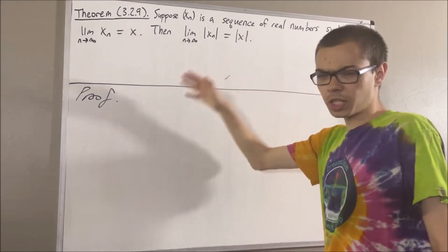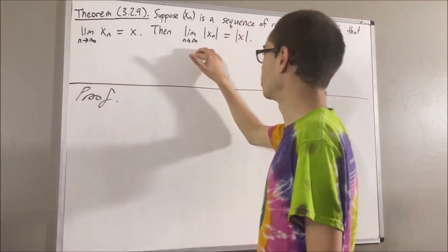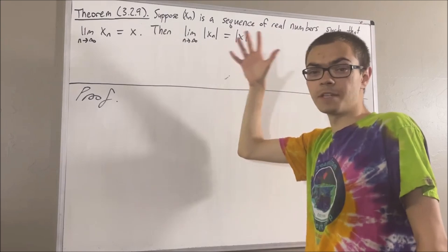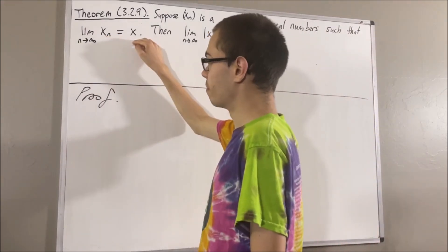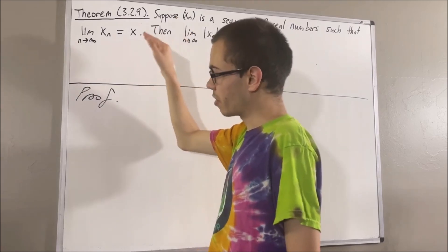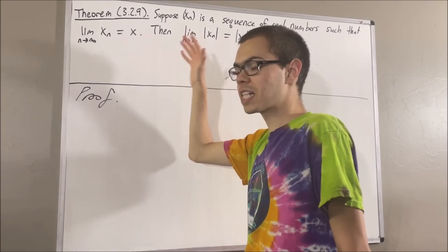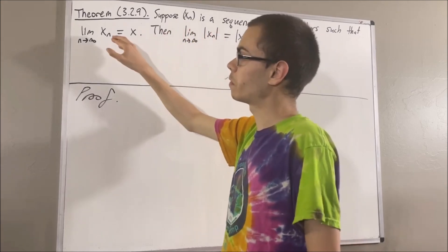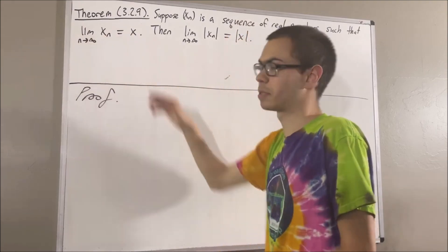Now, before we get to the proof, let's remind ourselves what these two things mean. If we recall from the definition of the limit of a sequence, to say that xn converges to x means that for every epsilon greater than zero, there exists a positive integer k such that for all positive integers n greater than or equal to k, the absolute value of xn minus x is less than epsilon.